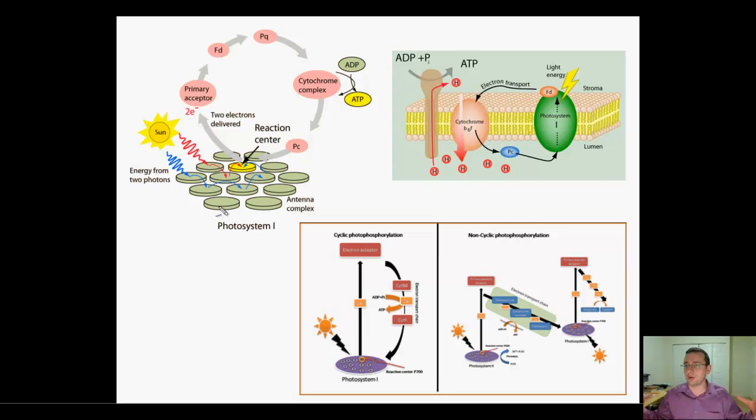and eventually all the electrons, all the energy captured by all the pigments, end up in the chlorophyll A reaction center, the P700 reaction center, which is the photosystem 1 reaction center. Then that energy gets bumped out of the photosystem into a primary electron acceptor.